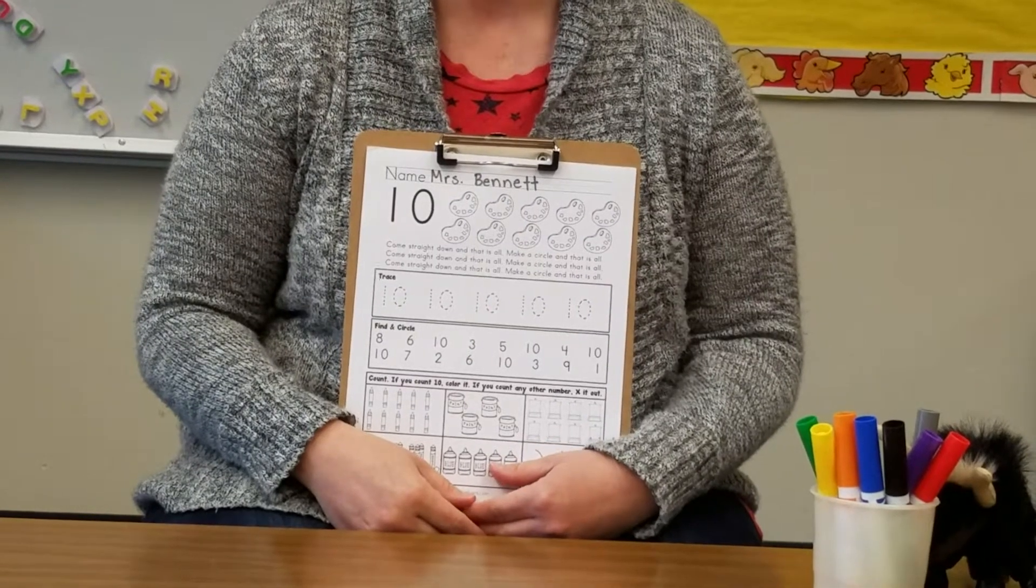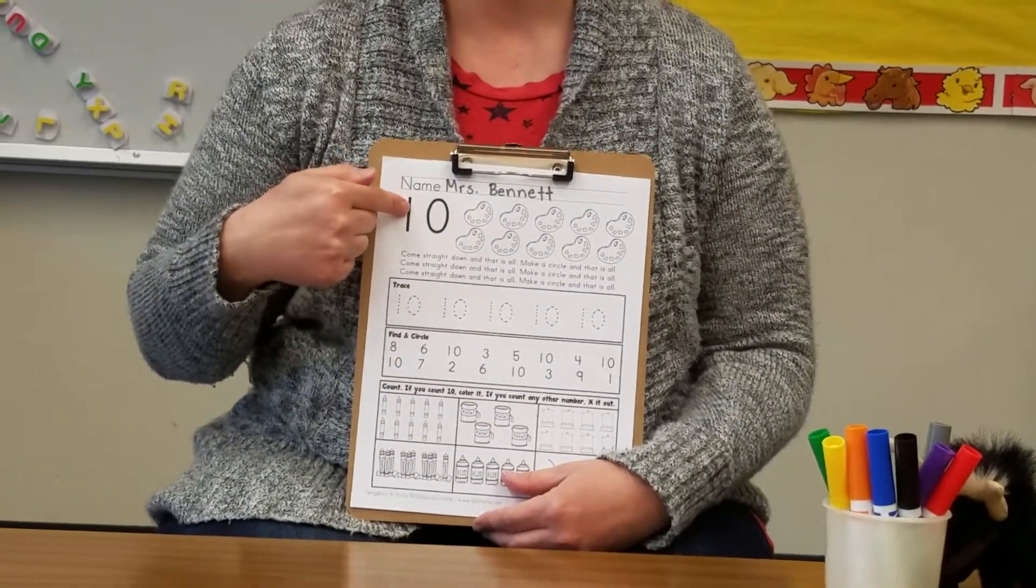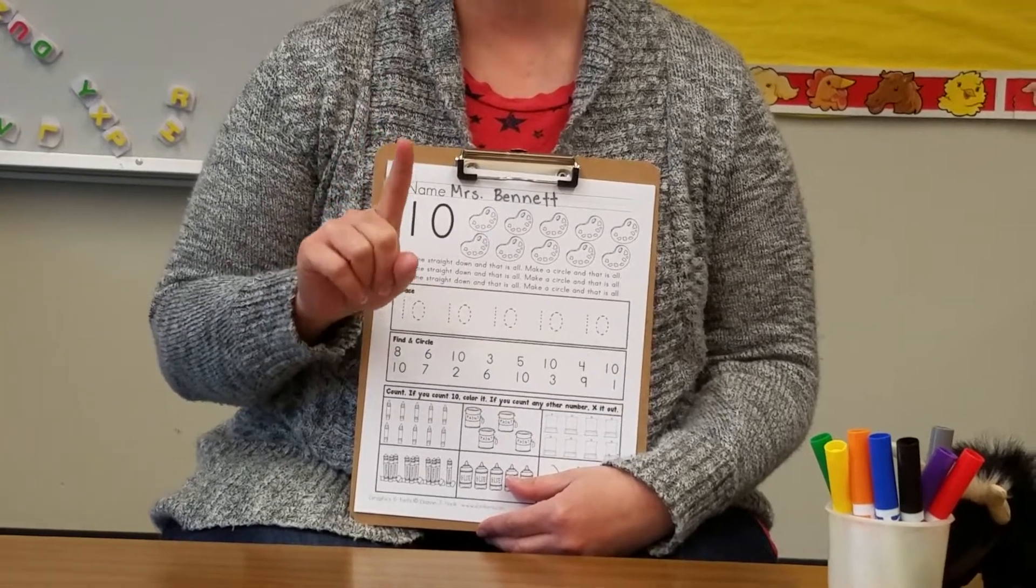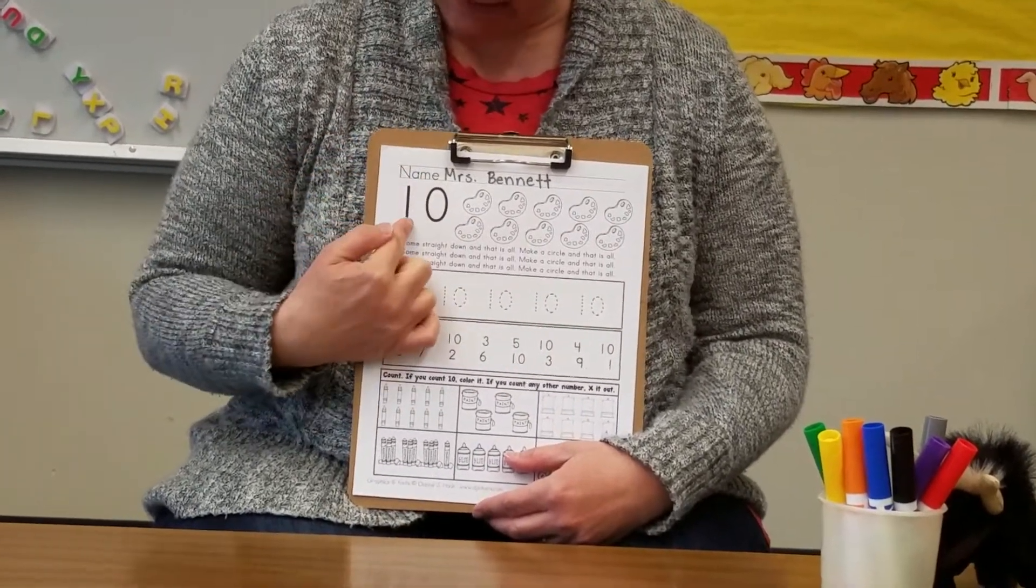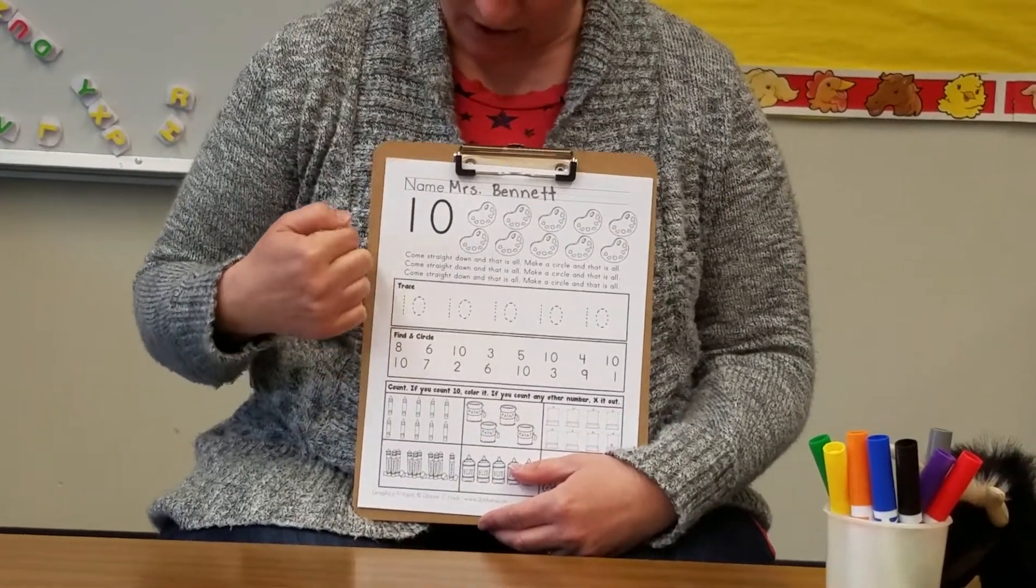Here we go. As always when we learn how to write our number we start by tracing the big one with our finger. Number 10 is actually two numbers and we're going to write them right next to each other.